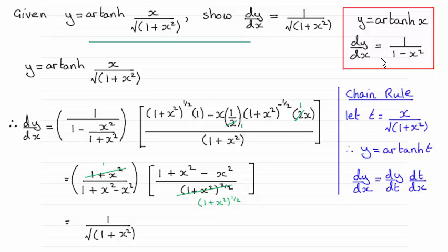dy/dt though would be 1 over 1 minus t squared. So you can see that I've done that part there: 1 over 1 minus, and then for t all squared I've just squared this result here.